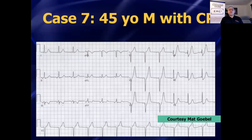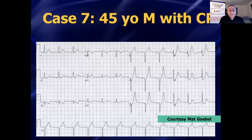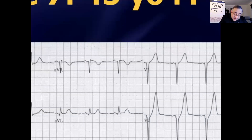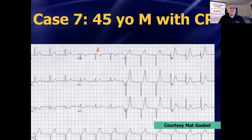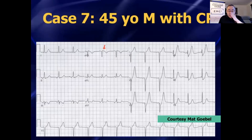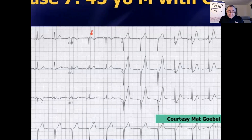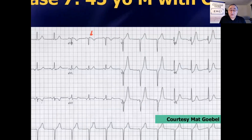Case number seven. Here's a 45-year-old guy who comes in with chest pain, actively having pain. Here's a 12-lead. Notice there's no ST elevation anywhere — maybe a tiny bit in lead AVR, which is common with what we're about to talk about. There is some ST segment depression in V2, V3, V4, V5, V6.